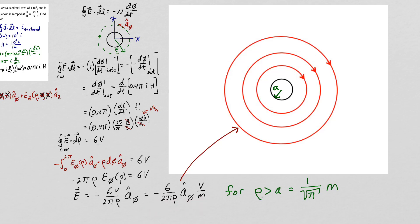So the electric field intensity forms circles around the solenoid in the clockwise direction. This is the electric field intensity for outside the solenoid, for rho greater than a, where a is the radius of the solenoid. Since the cross-sectional area of the solenoid is 1 square meter, the radius of the solenoid is 1 over the square root of pi meters. Unlike the electric field intensity that comes from charges, where they have a source positive charge and a sink negative charge, electric field intensity lines coming from a changing magnetic flux form closed paths.